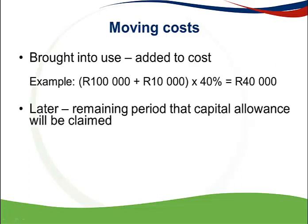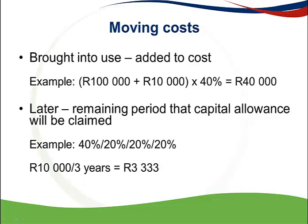If the moving cost is incurred at a later stage — for example in the second year — then the moving cost is claimed over the remaining period that the capital allowance for this specific asset can be claimed. For example, if the applicable percentage is 40/20/20/20% and moving costs are incurred in the second year, there are three years remaining. I will take the moving cost of 10,000 and divide it by three years, giving a deduction of 3,333 for the current year of assessment.